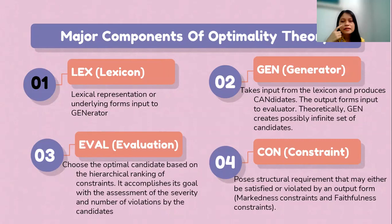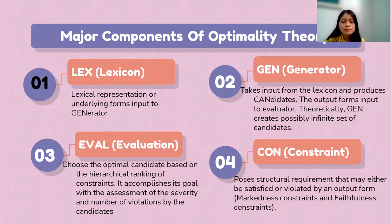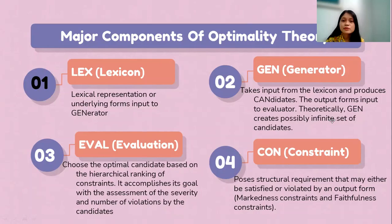In GEN there will be some candidates: Candidate 1, 2, 3, and 4. These move to EVAL, or evaluation, to choose the optimal candidate based on the hierarchical ranking of constraints. It accomplishes its goal by assessing the severity and number of violations by the candidates. The last component is CON, or constraint — the structural requirements that may be either satisfied or violated by an output, deriving from markedness constraints and faithfulness constraints.